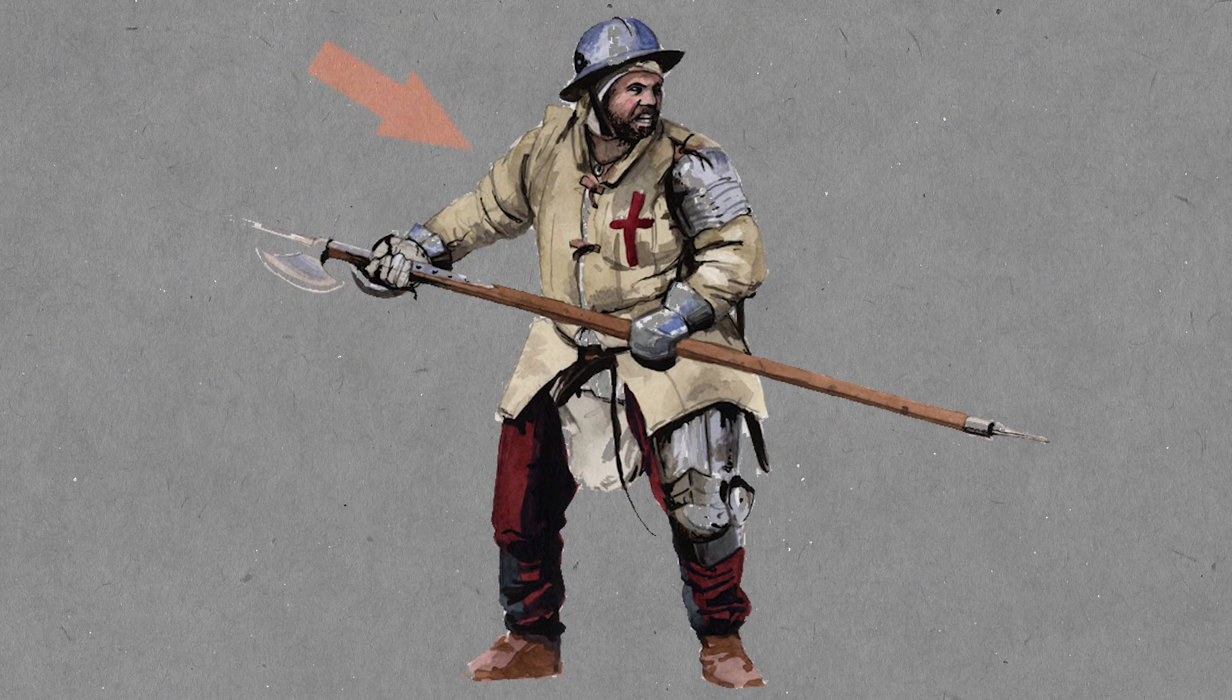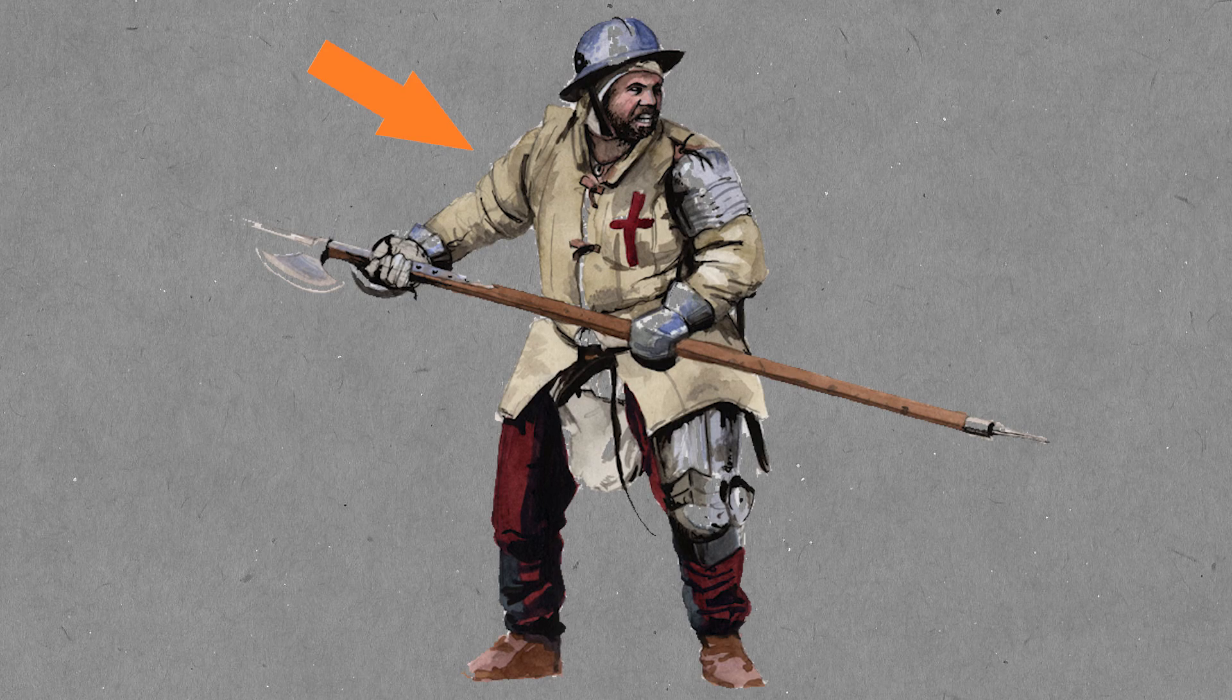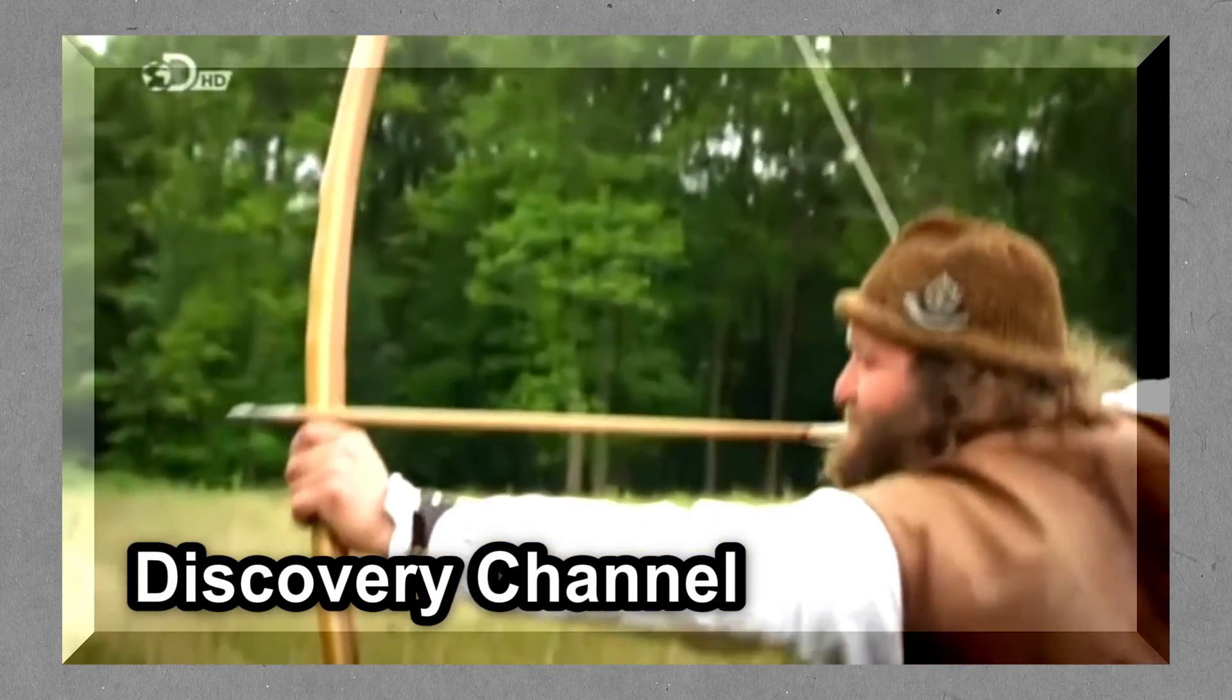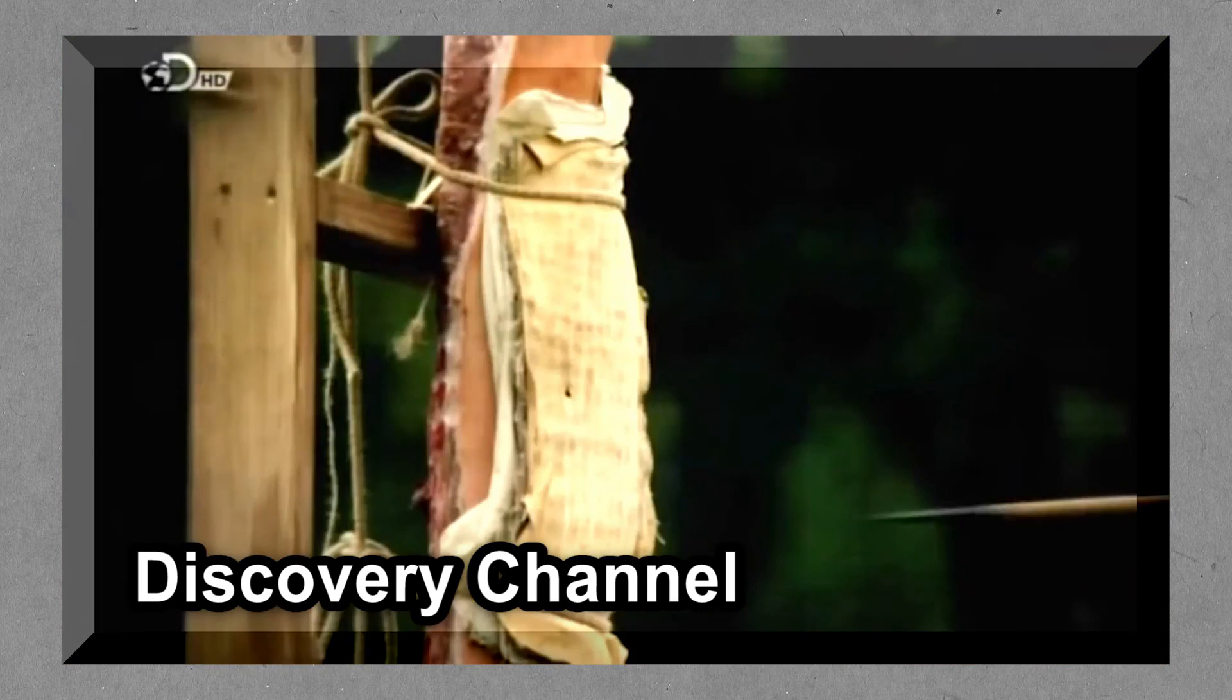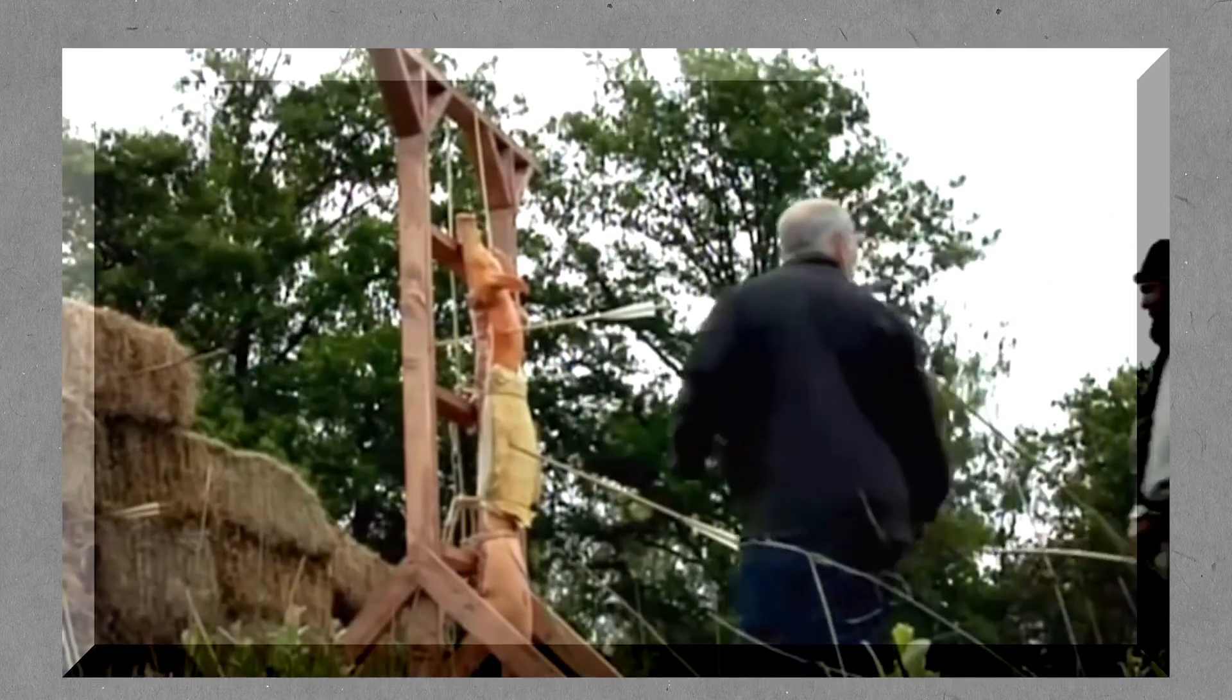Also, even if the enemy is just wearing a gambeson, which is basically a thick coat, that still gives their shoulders protection. It's been demonstrated that gambeson can stop an arrow even though it's just a soft armor. And again, with your slower arrow, you're even less likely to penetrate that gambeson.